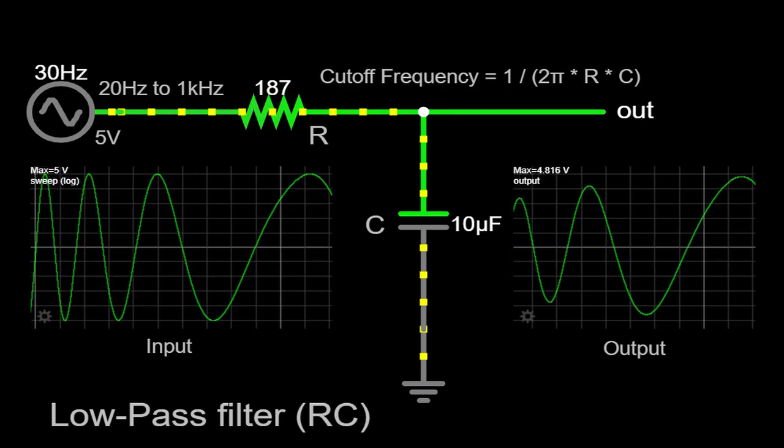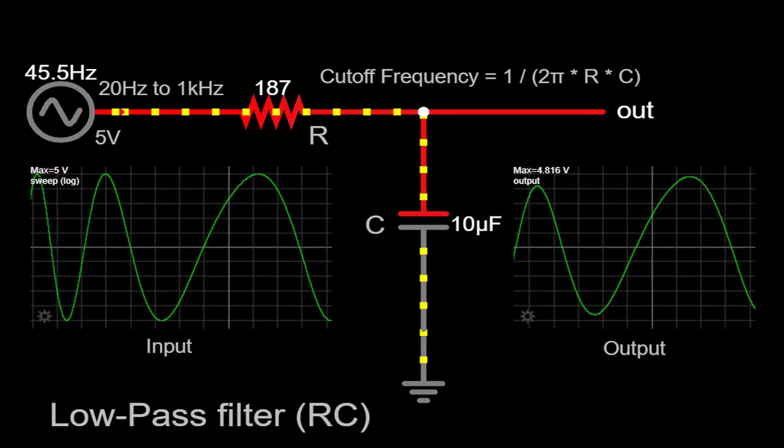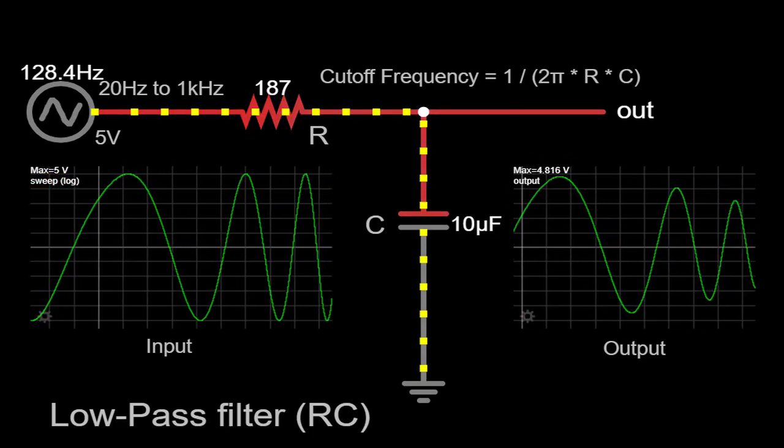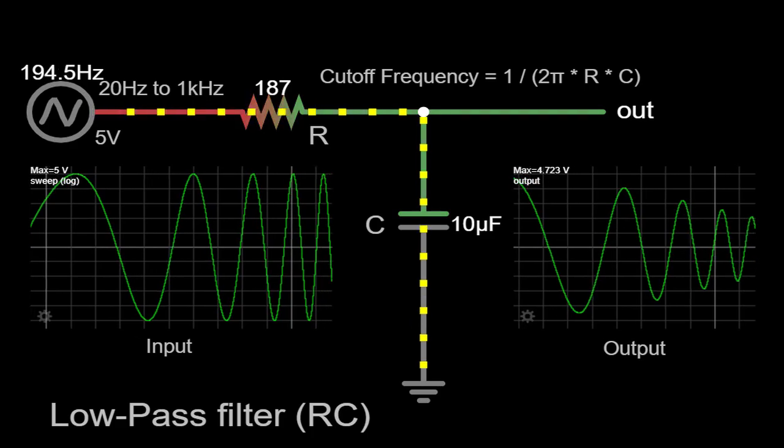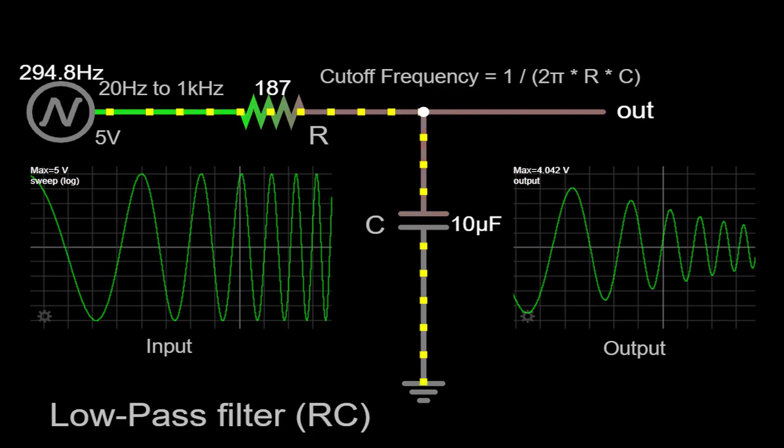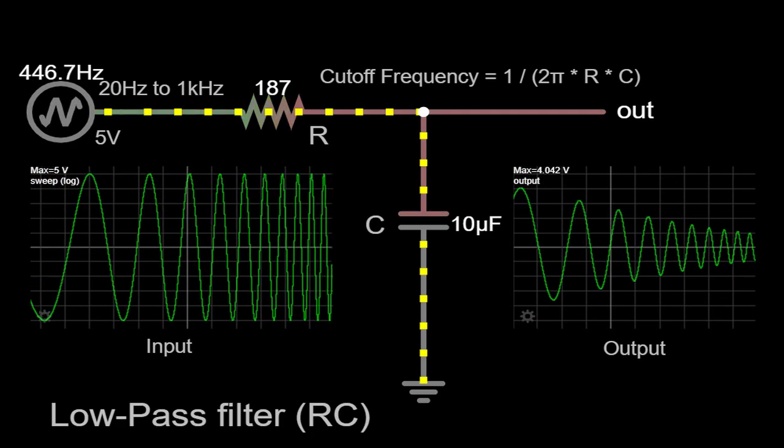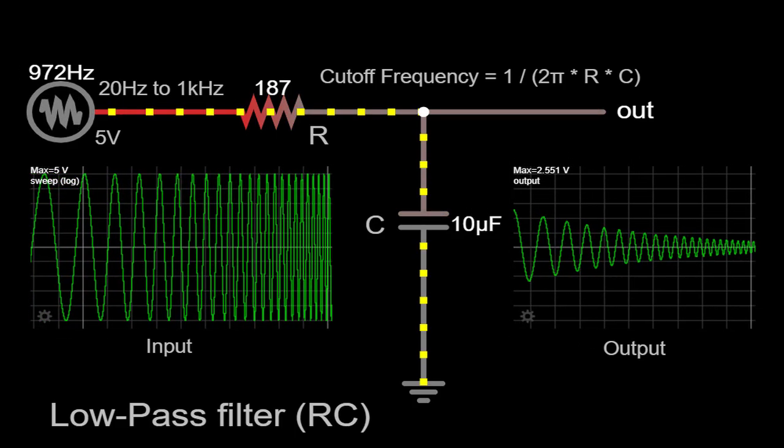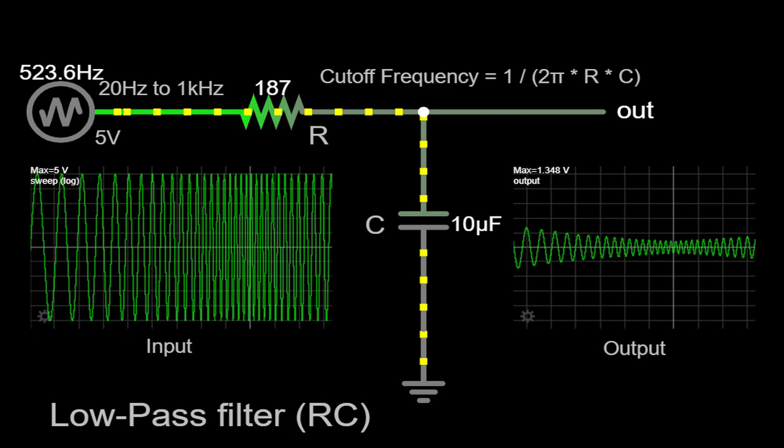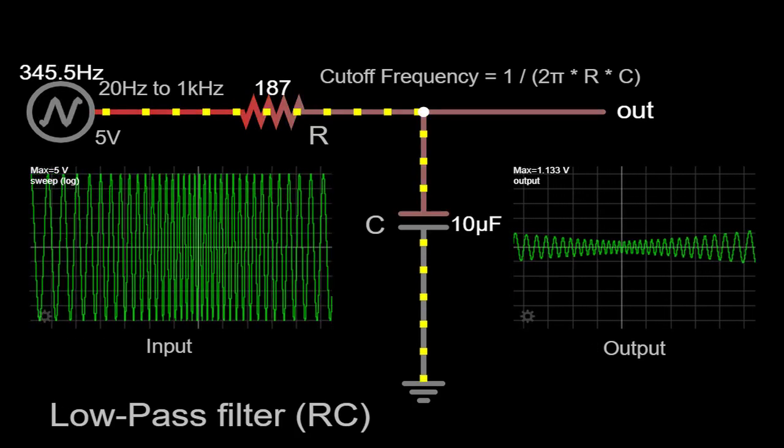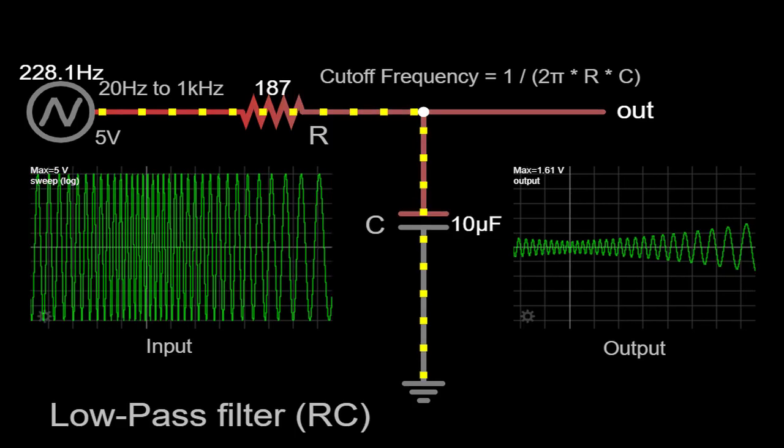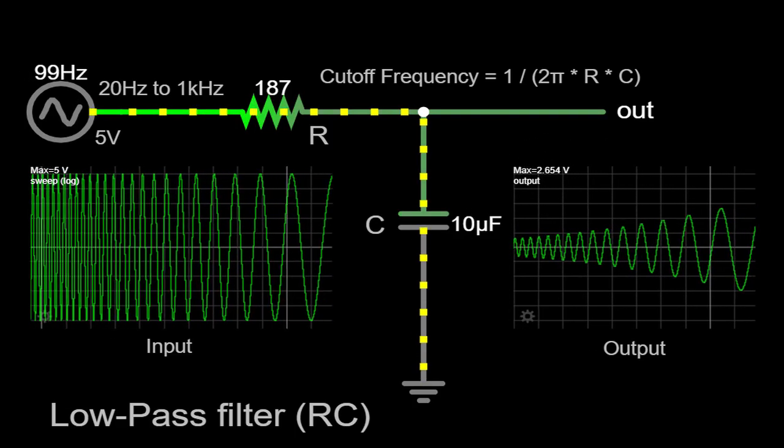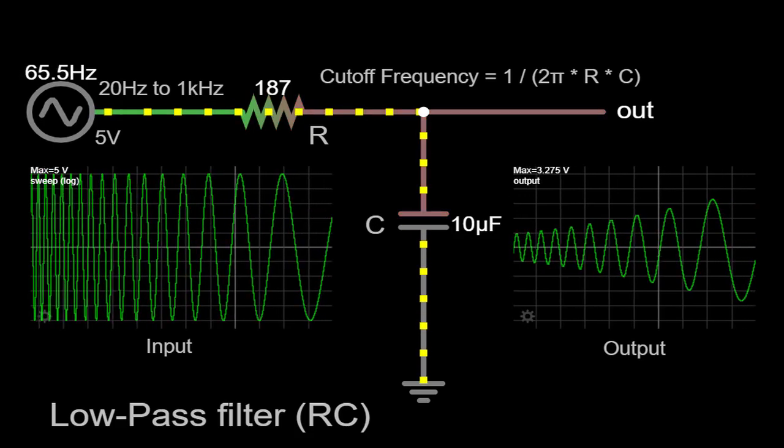We hope that this detailed explanation has provided you with a comprehensive understanding of how the low-pass filter operates in an RC circuit. Remember to explore different resistor and capacitor values to customize the cutoff frequency according to your specific application requirements. If you have any questions or comments, please feel free to leave them below. Thank you for joining us today, and we look forward to bringing you more exciting content on electronics and circuitry. Stay tuned and see you next time.